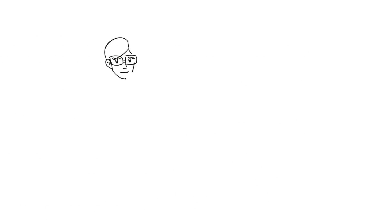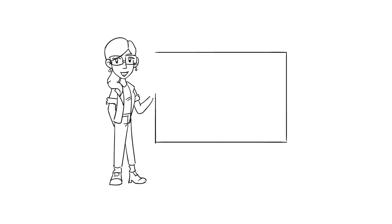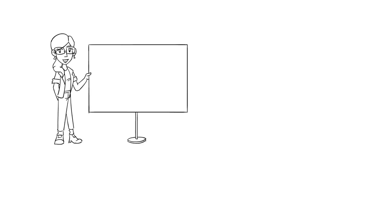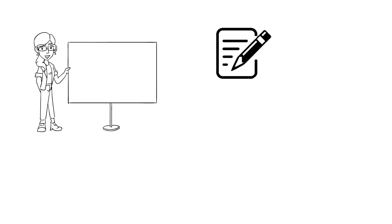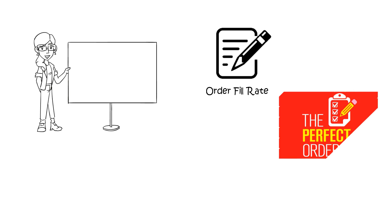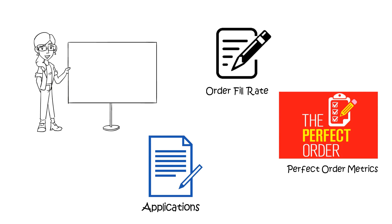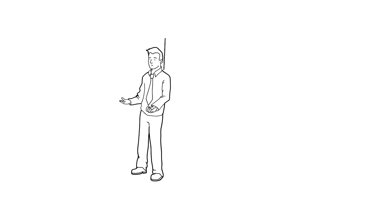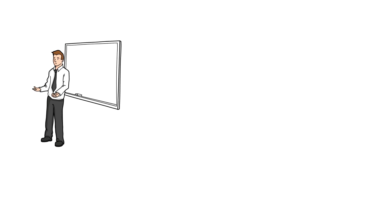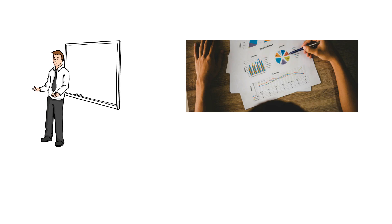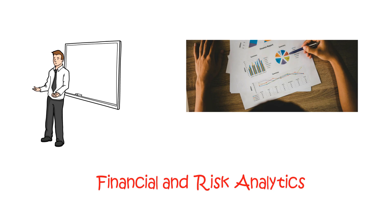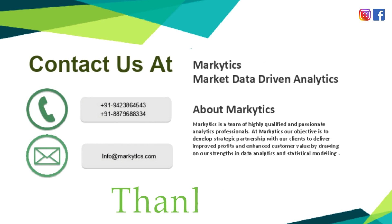Thus we end our session here. In this session we learned two important metrics: order fill rate and perfect order matrix, and the applications of these metrics. In the next session we will start a new section of Analytics Mastery sessions: financial and risk analytics. Thank you.